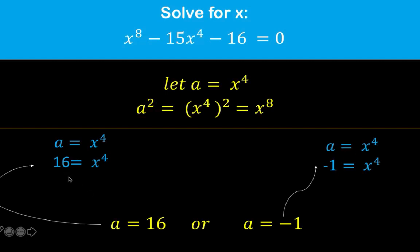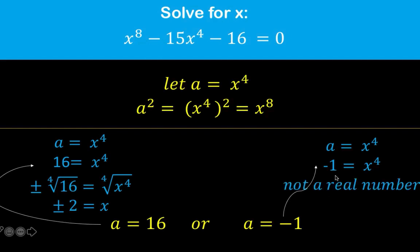At the left side, solving now for x, we can extract the 4th root of both sides to get x equals plus or minus 2. Then notice that at the right side, this is not a real number, because you cannot find any number such that when you multiply that number 4 times, the result is negative 1.